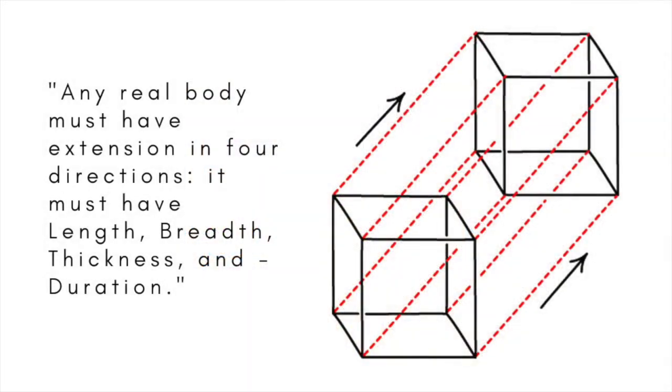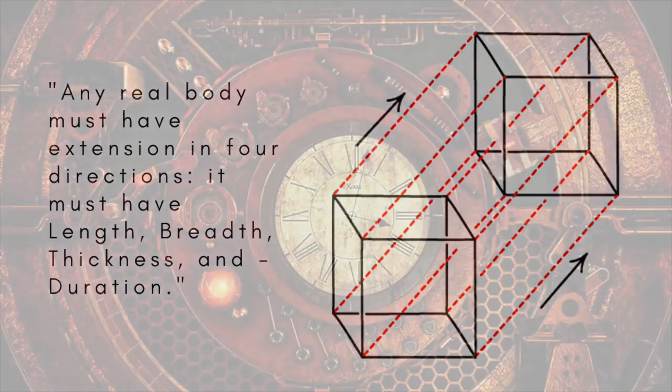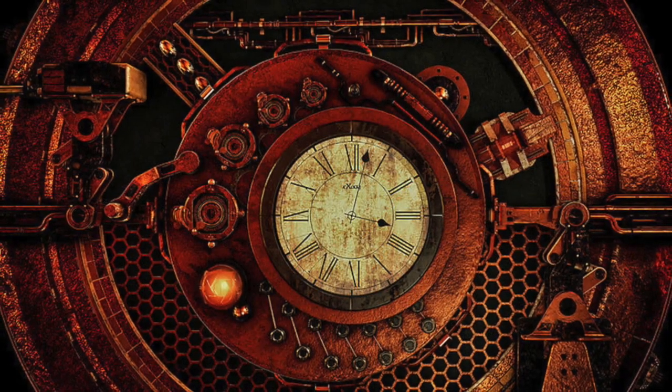Any real body must have extension in four directions: it must have length, breadth, thickness, and duration. There are really four dimensions, three of which we call the three planes of space and a fourth, time. There is, however, a tendency to draw an unreal distinction between the former three dimensions and the latter, because it happens that our consciousness moves intermittently in one direction along the latter, from the beginning to the end of our lives.